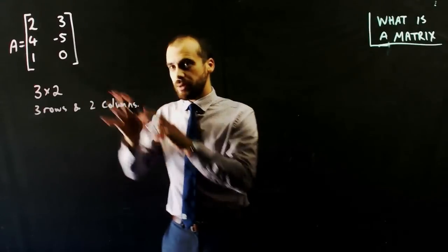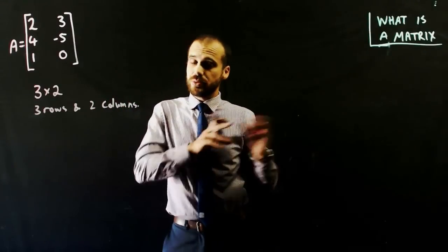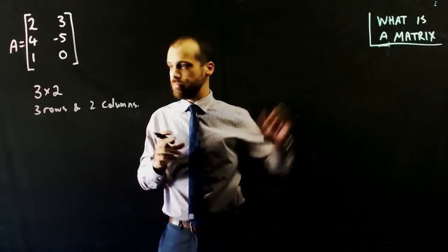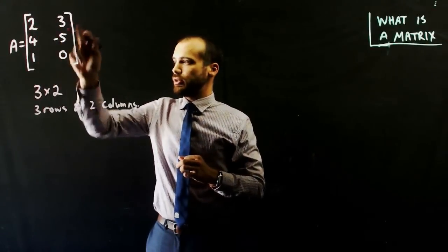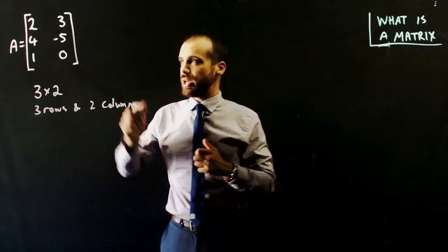So when you're talking about matrices, which is the plural of matrix, you always talk about the row first and then the column. So that's a 3 by 2 matrix.